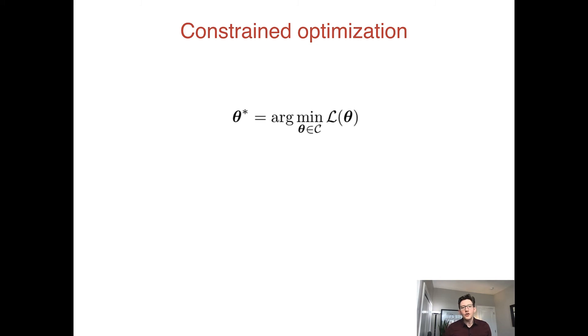By the way, there is one way that we can reduce a constrained optimization to an unconstrained optimization, and that's as follows. Let's define a new negative log-likelihood function, L*, where here is L and here is our constraints, the set of theta we're willing to choose.